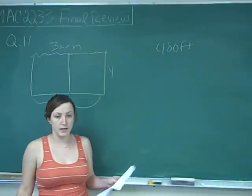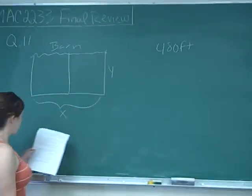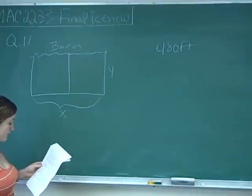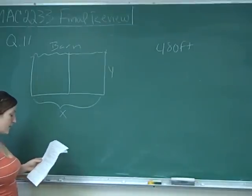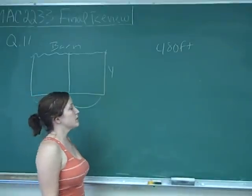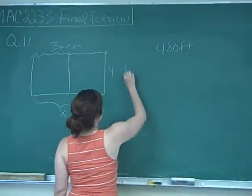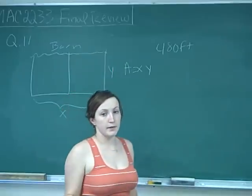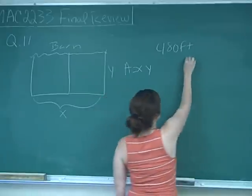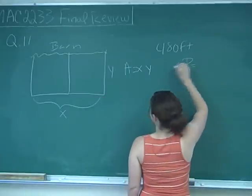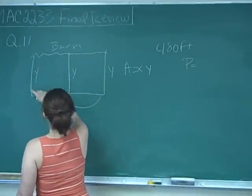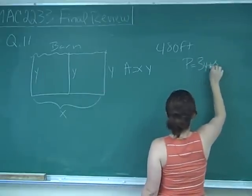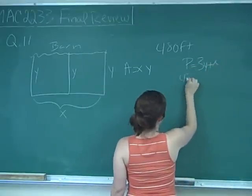Question number 11 is an optimization problem. Two adjacent corrals are to be constructed next to a barn using 480 feet of fencing. If no fence is needed on the barn side, find the values of x and y that will maximize the total area enclosed. The area equals x times y, and we're limited by the fencing, so our perimeter equation is 3y plus x equals 480.